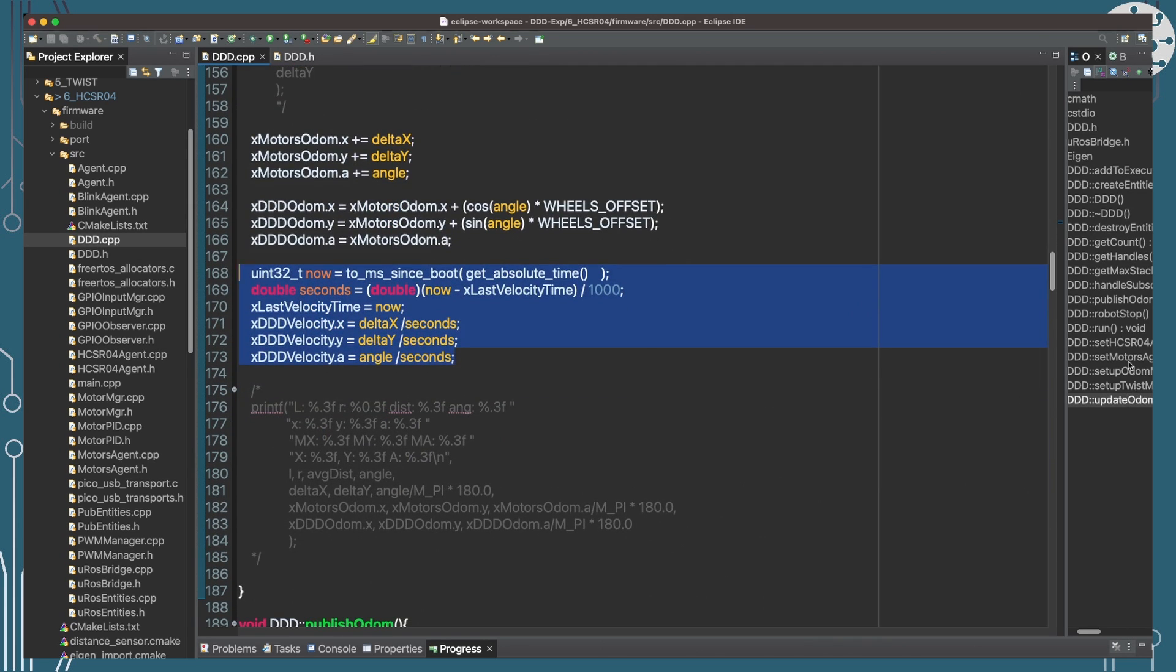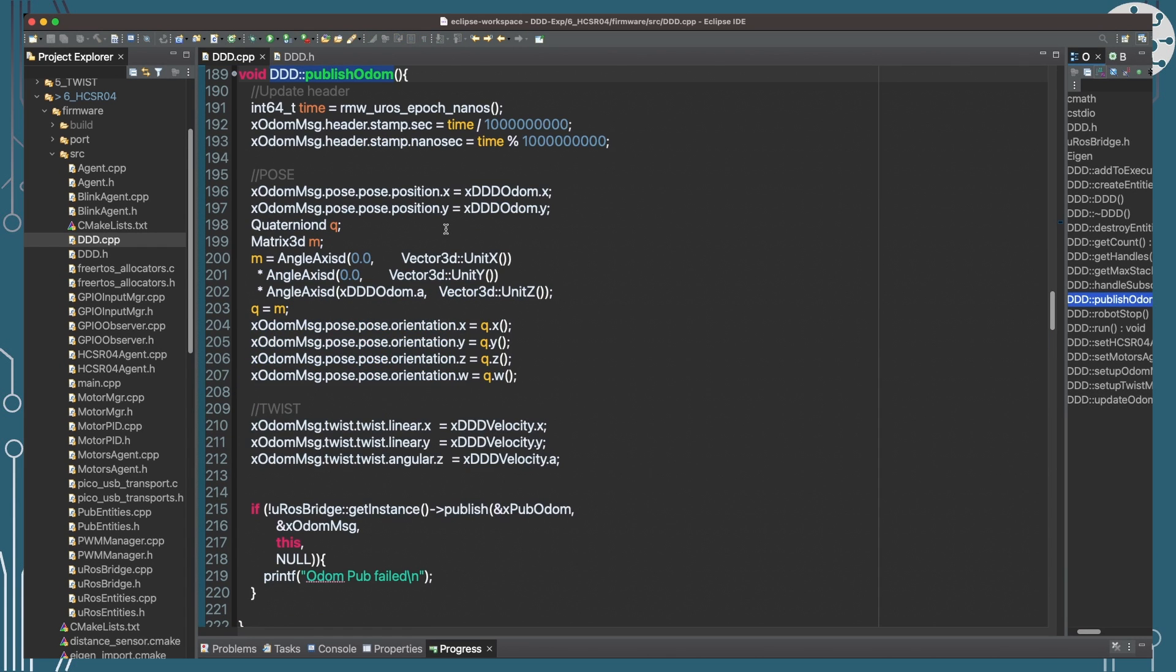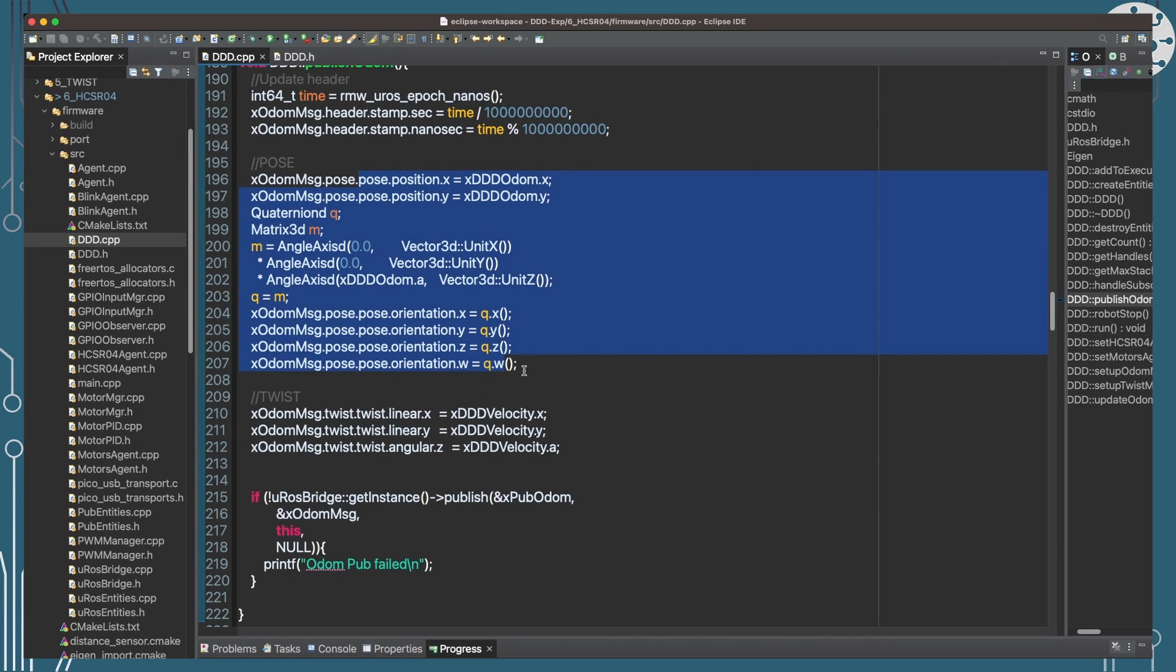So publishing our Odometry is very simply just copying these values over. Well actually it's first of all setting up our header and timestamps in that header, then copying over these values from the Odometry into the Odometry message, and then asking our MicroROS bridge object to send it for us. And that's it, pretty simple. So let's have a little look at a demo and see how this works.